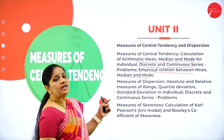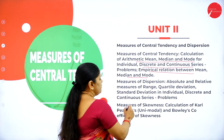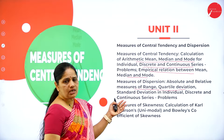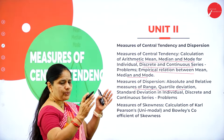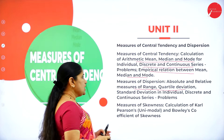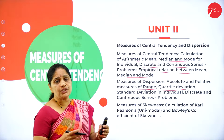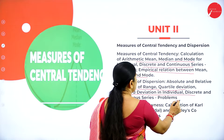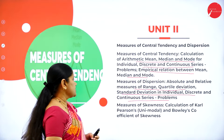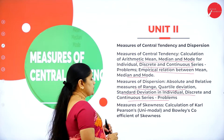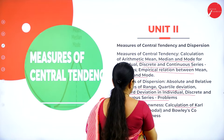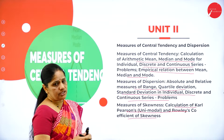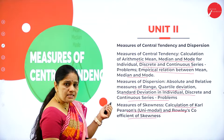In addition to that, we have measures of dispersion — discussing what is the range, the highest score and lowest score, and all scores in between. Then we have the quartile deviation — Q1, Q2 and Q3 scores — then standard deviation for individual, discrete and continuous series. In the measures of skewness, we will be having a calculation of Carl Pearson's unimodal and Bowley's coefficient of skewness. This comprises unit 2.